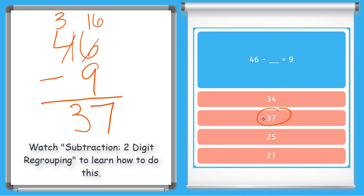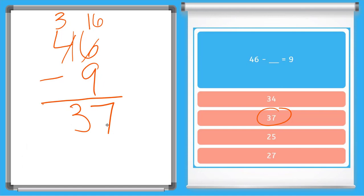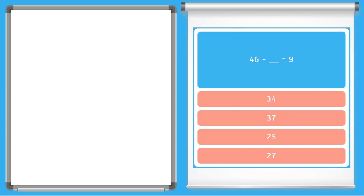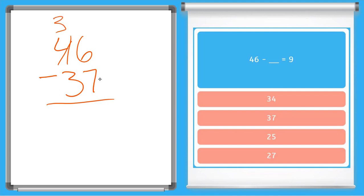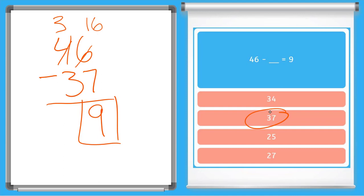Now if we wanted, we could go back and check our work by plugging in 37 into the problem. So plugging it in, I have 46 and I'm going to subtract 37 and see if we get 9. We cannot take 7 from 6 so we have to borrow — the 4 becomes a 3, and 6 becomes 16. 16 minus 7 equals 9, and 3 minus 3 is 0. So our final answer is 9. That means 46 minus 37 equals 9, and we confirmed that by checking our work.